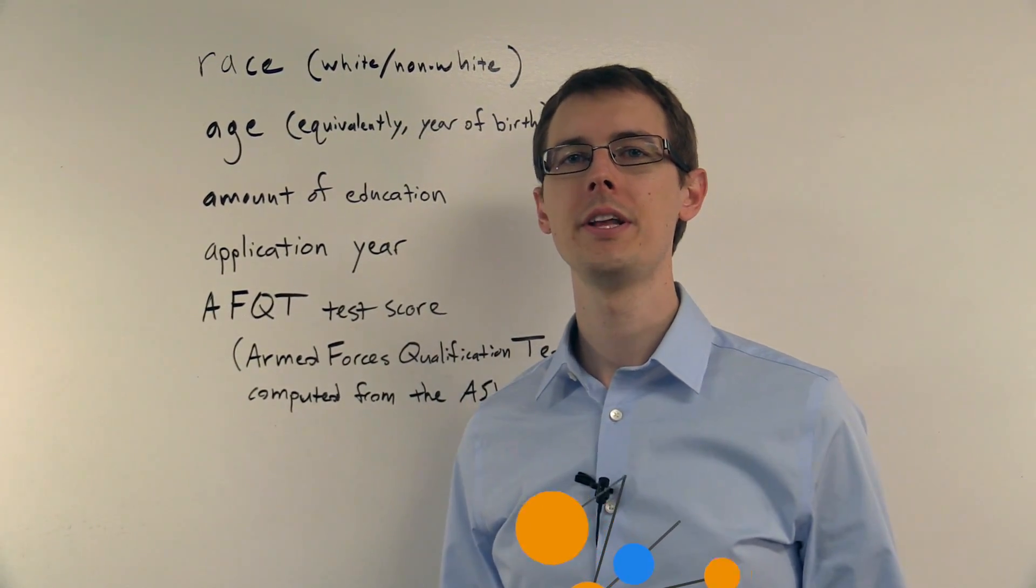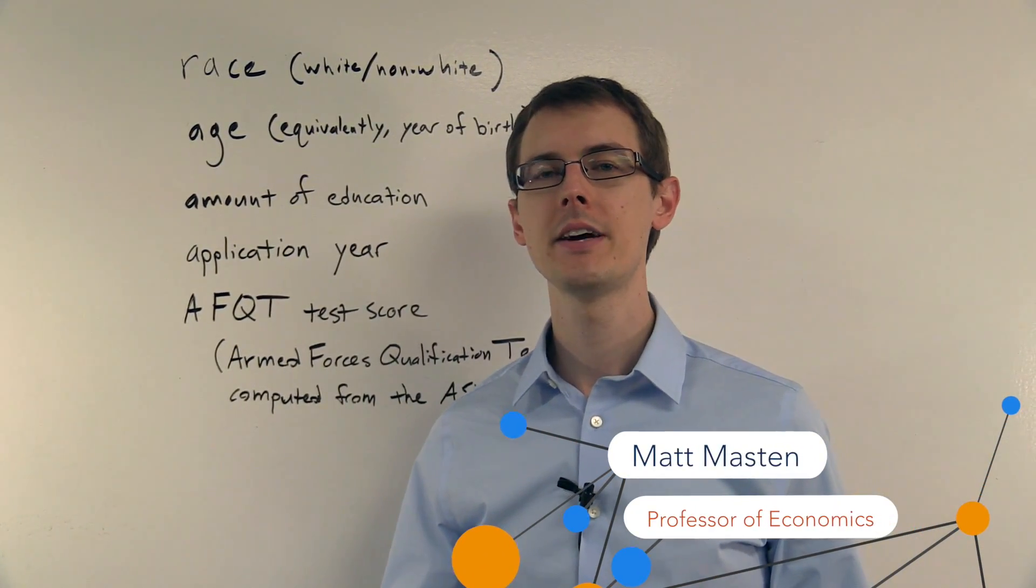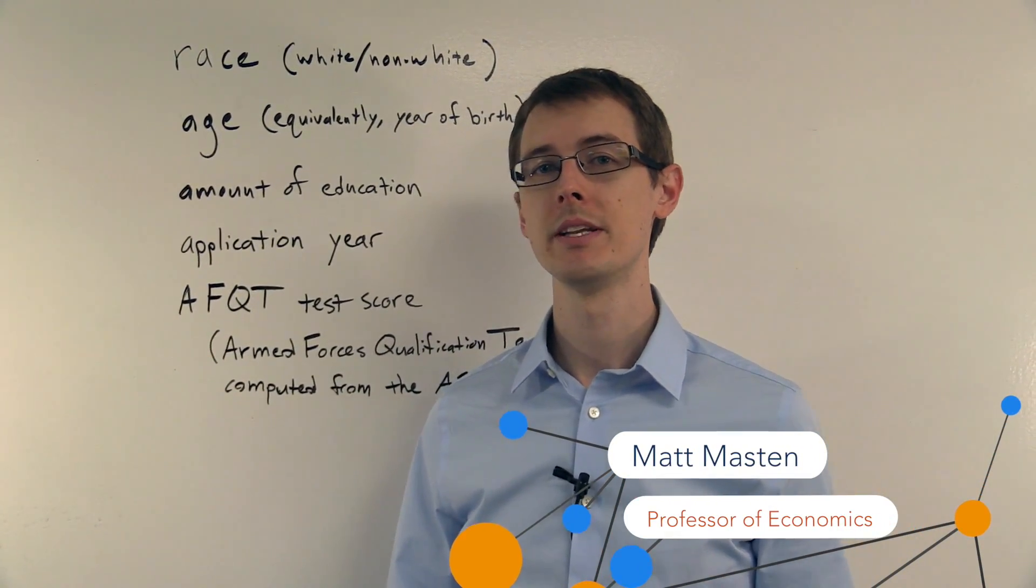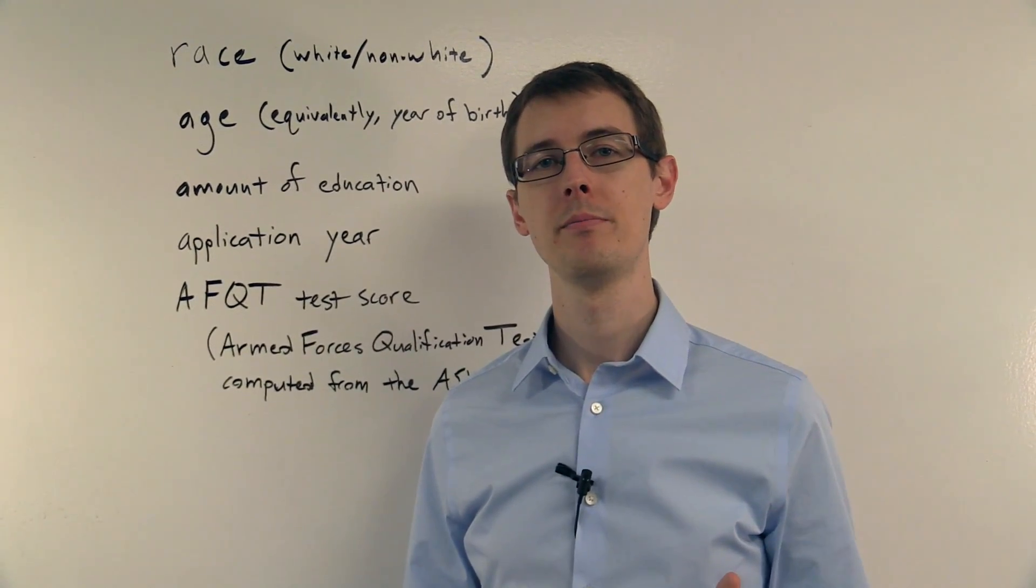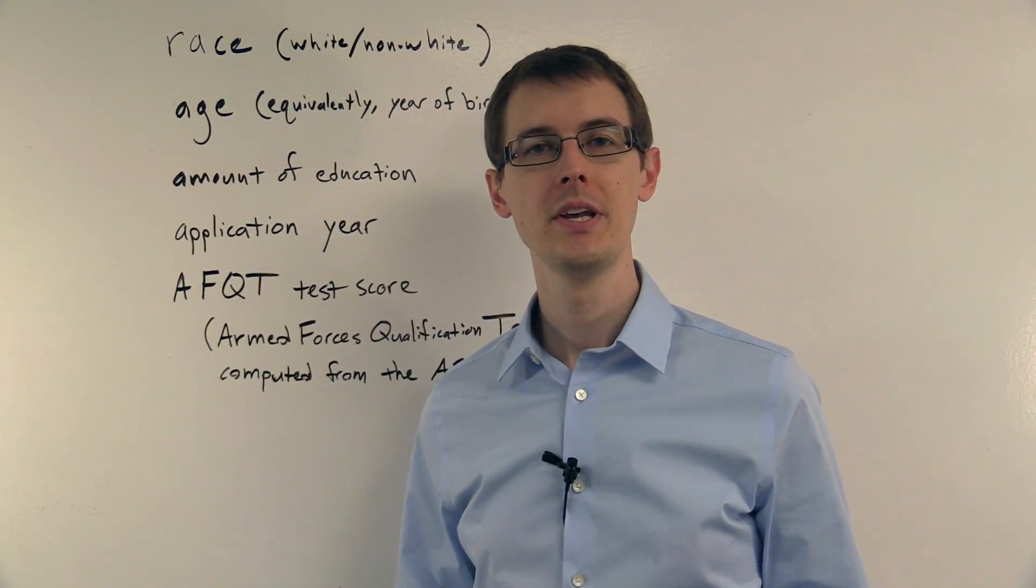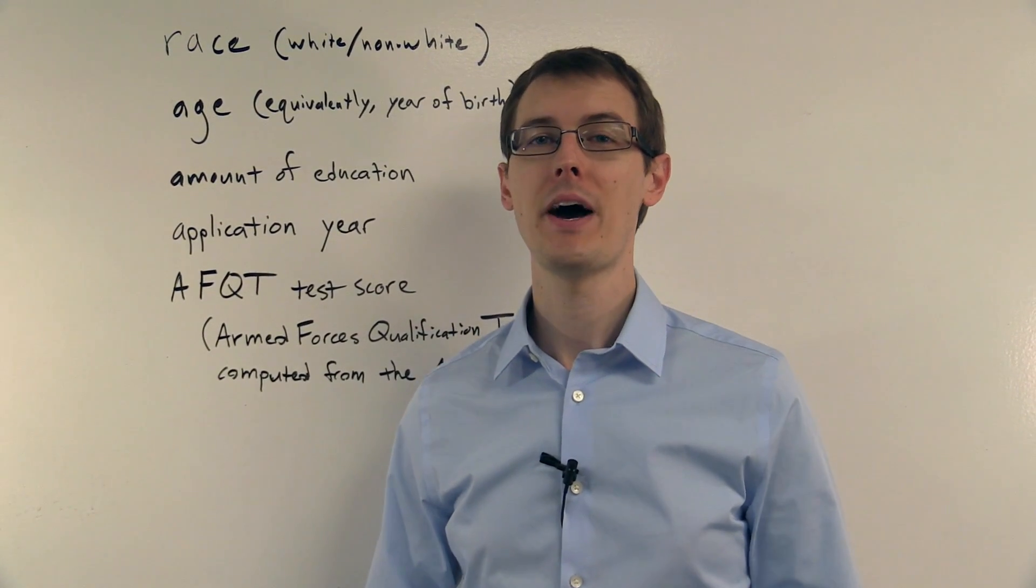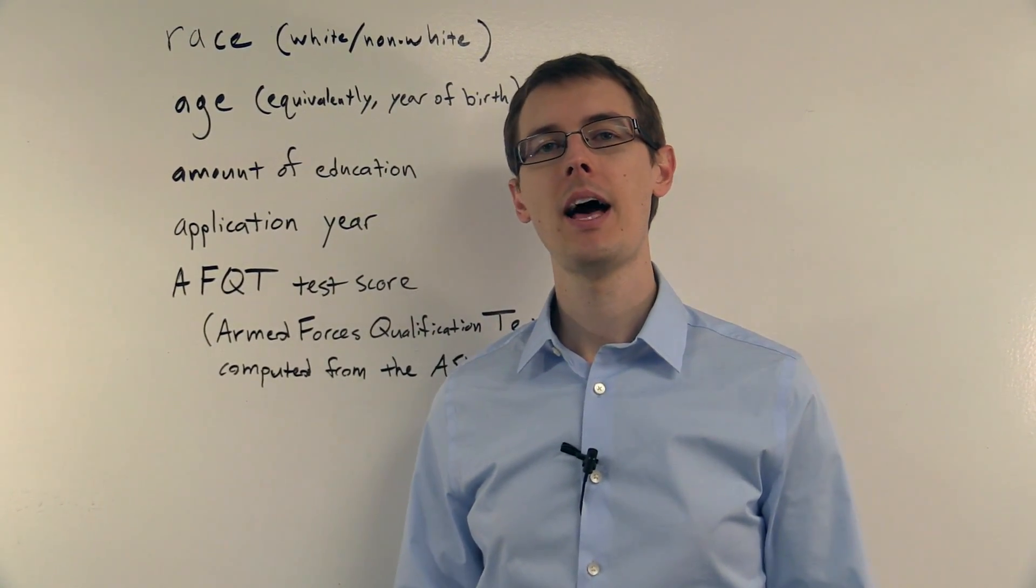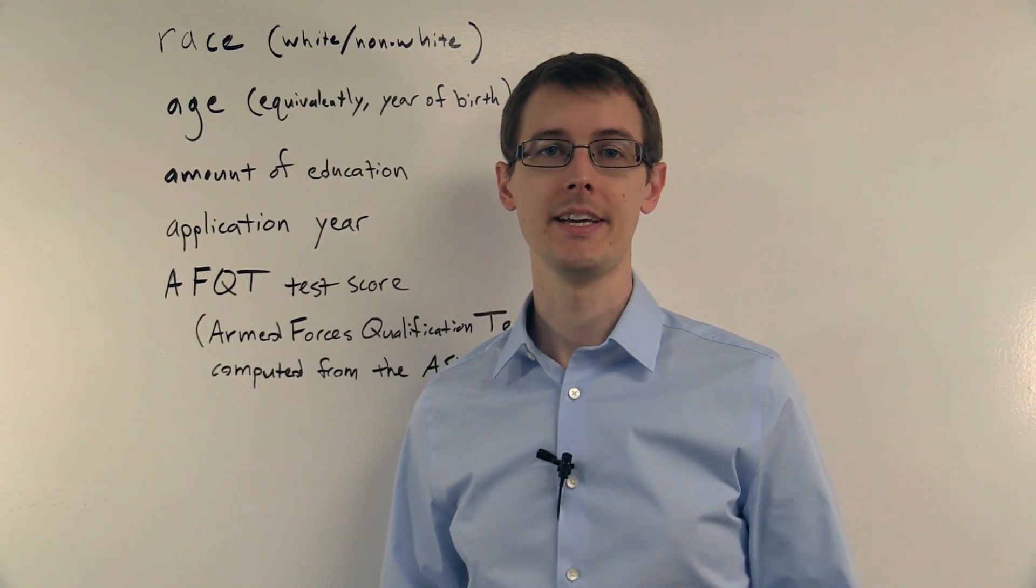We know we can't just compare the earnings of people who enlisted in the military with people who did not enlist because of the selection problem. So what's Angrist going to do? He's going to make an unconfoundedness assumption and then apply regression and matching techniques.